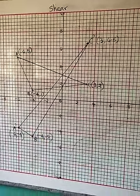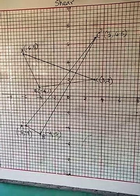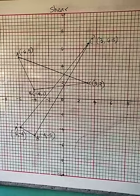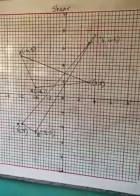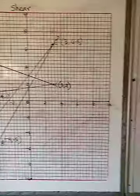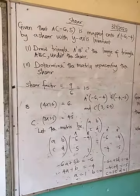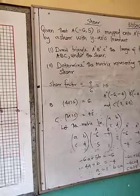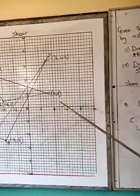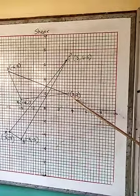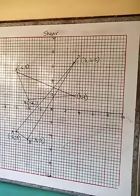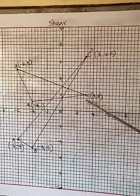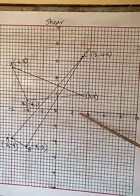Therefore, the coordinate of B prime after the shear is negative 4, negative 5, as the shear coordinate of B after it has been sheared by the given shear factor of 1.5. Moving to C, the coordinate of C is 3, 2. C is therefore 3 units from the invariant line.